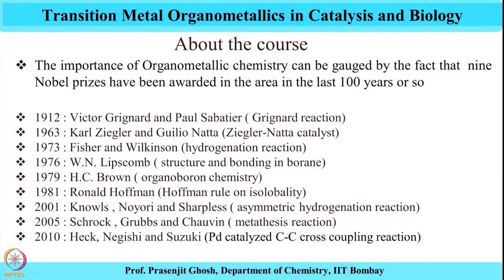The 2005 prize can be said to be a second Nobel Prize to the organometallic polymerization field — the first being that of Carl Ziegler and Giulio Natta in 1963 for polyolefin polymerization, and again after a span of about 40 years, Schrock, Grubbs, and Chauvin receiving the Nobel Prize for olefin metathesis. What I intend to highlight is the fact that applications of transition metal organometallics in catalysis and biology have tremendous potential, now being realized and recognized with so many Nobel Prizes in the last 100 years.